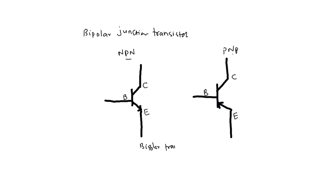Why do we call it bipolar? Because the current conduction in BJT is because of two types of charge carriers: one is electrons and another is holes. These are the positive and negative type of charge carriers.